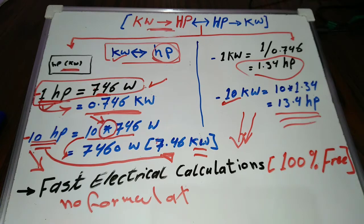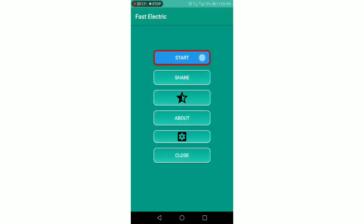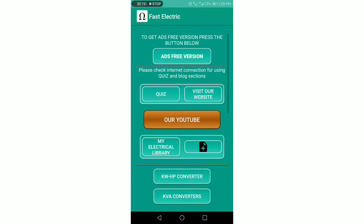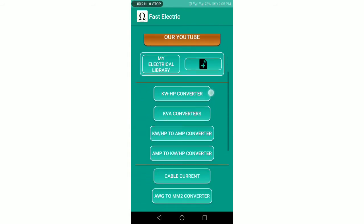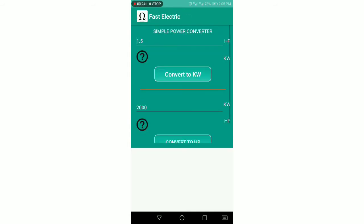Let's see how to use Fast Electrical Calculations app to convert kilowatt into horsepower. We simply start the app, then press the start button. Scroll down to the button KWHP converter and press it. Here we are.